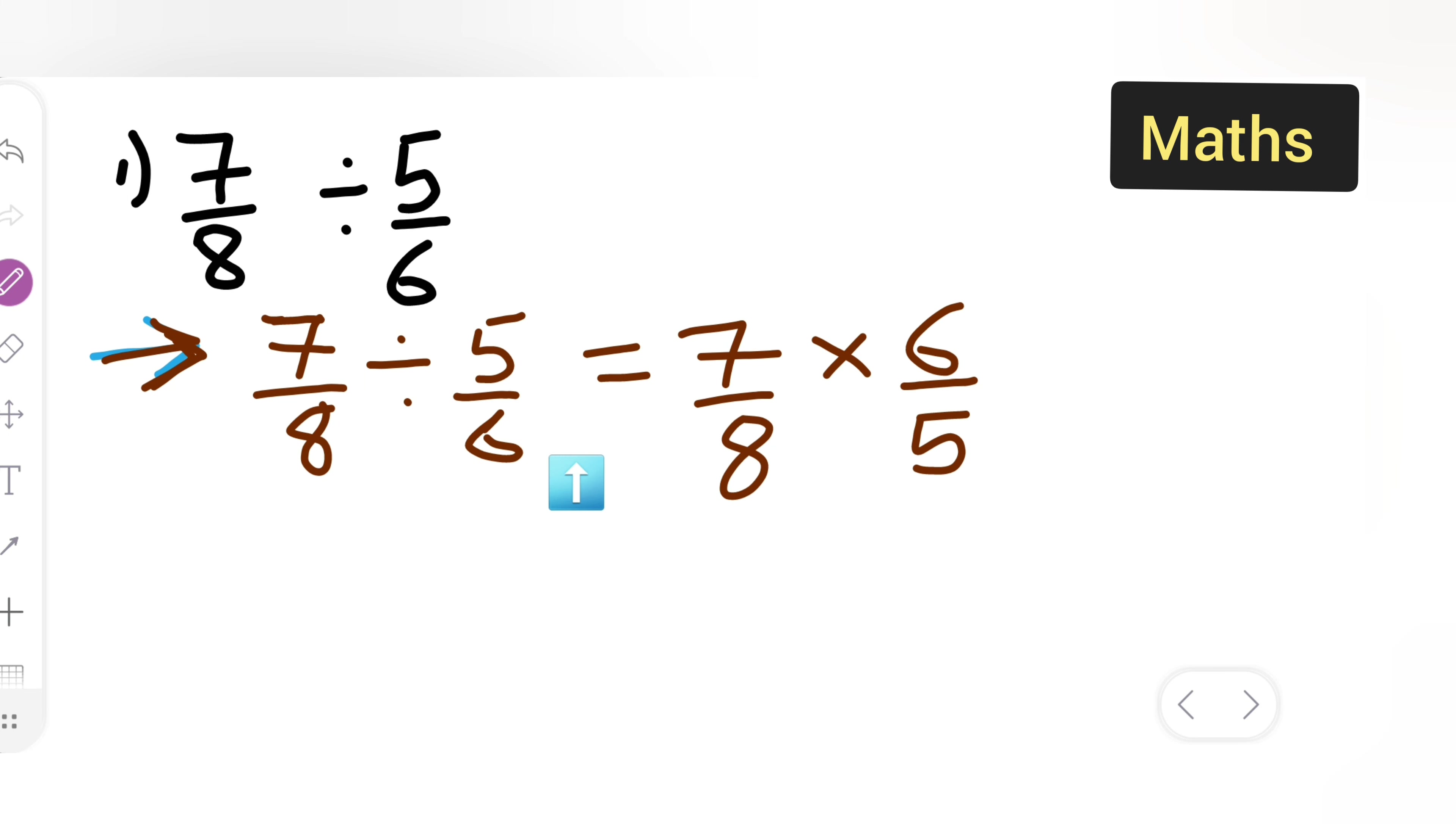Next thing, you have to cancel this. 2, 3s are 6, 2, 4s are 8. So you are left with 7 upon 4 multiplied by 3 upon 5.